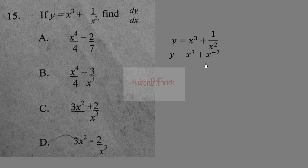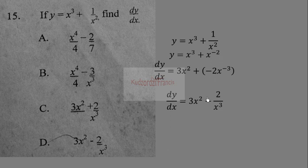Differentiating, we get dy/dx = 3x² + (−2)x⁻³. We multiply by the exponent and subtract 1 from the exponent. This gives us 3x² − 2/x³. Option D is the correct choice.